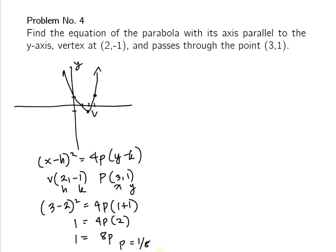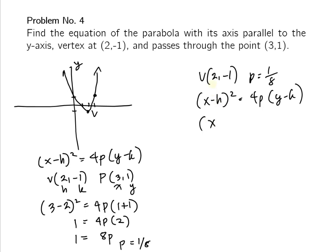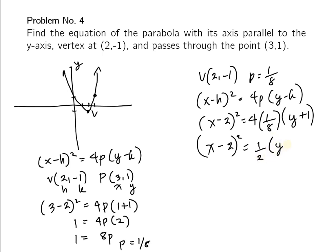With vertex (2, -1) and p = 1/8, substituting into (x - h)² = 4p(y - k): (x - 2)² = 4 × (1/8) × (y - (-1)), which simplifies to (x - 2)² = (1/2)(y + 1). So this is the final equation.